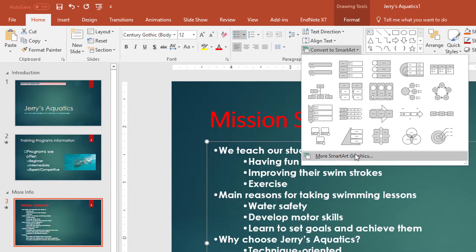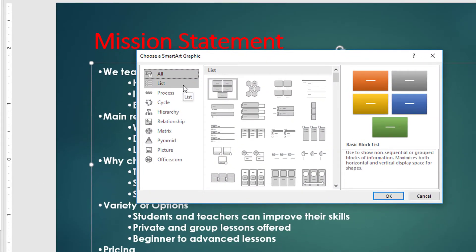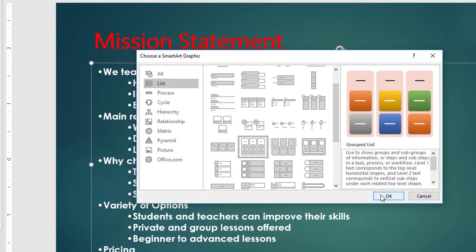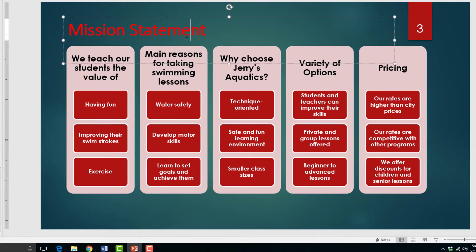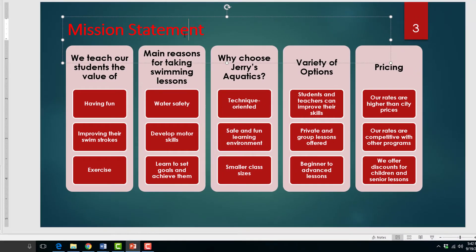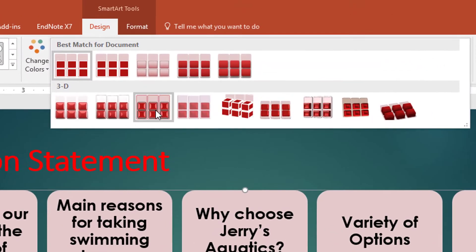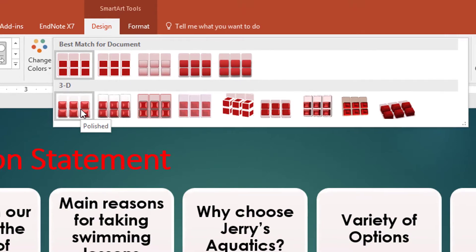You can click the More SmartArt button to bring up all the SmartArt options like we did before. We're going to go with the Group List layout option. You can also add some style by choosing the Polished SmartArt style from the SmartArt Styles gallery.